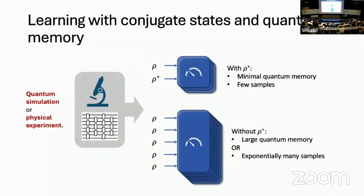I'm going to tell you the punchline in the first slide and then we'll see how this situation arises. The punchline is: there'll be a learning task defined on some unknown quantum state, which will come from an experiment or maybe a quantum simulation in a computer. There'll be some well-defined learning task where if I'm allowed access to entangled measurements on the unknown state tensored with its complex conjugate state — a state where I just complex conjugate every entry of the density matrix, so it's a well-defined quantum state — then I can achieve this task with logarithmically many samples.